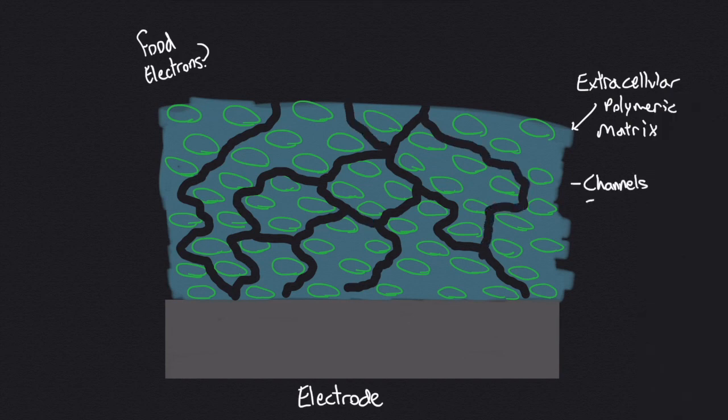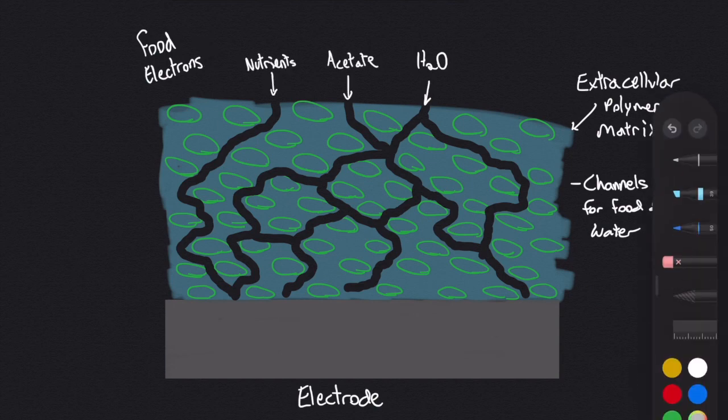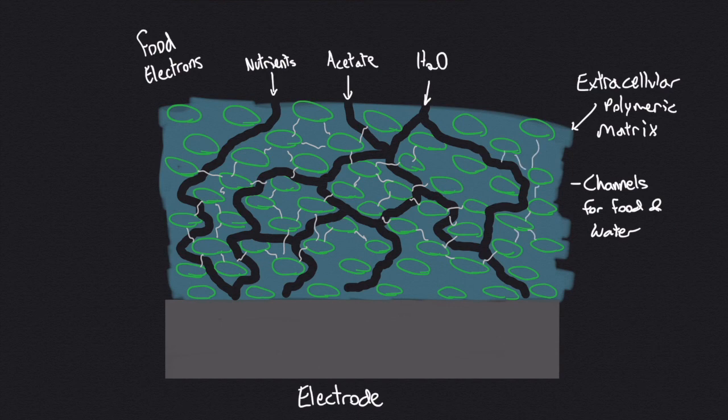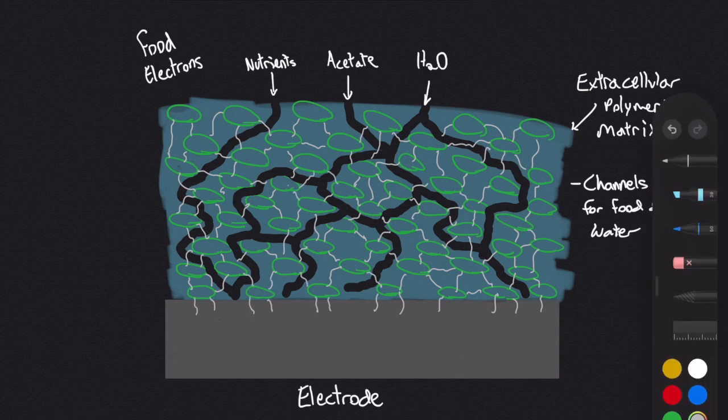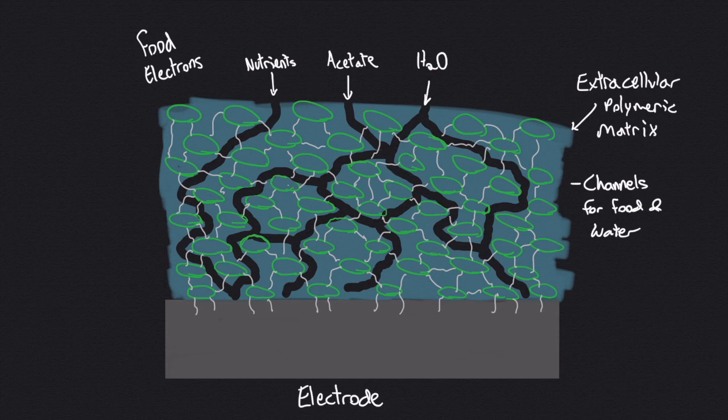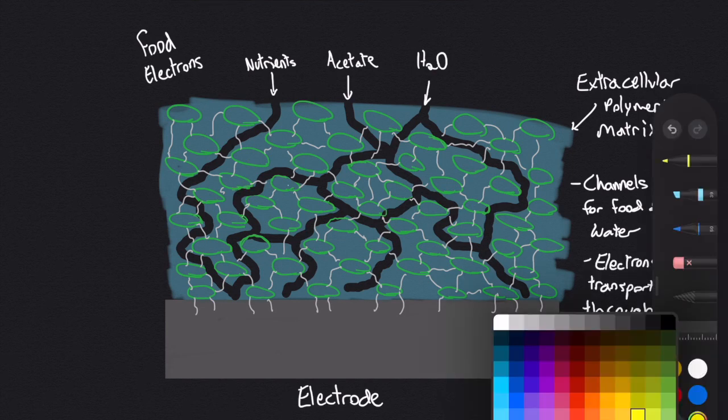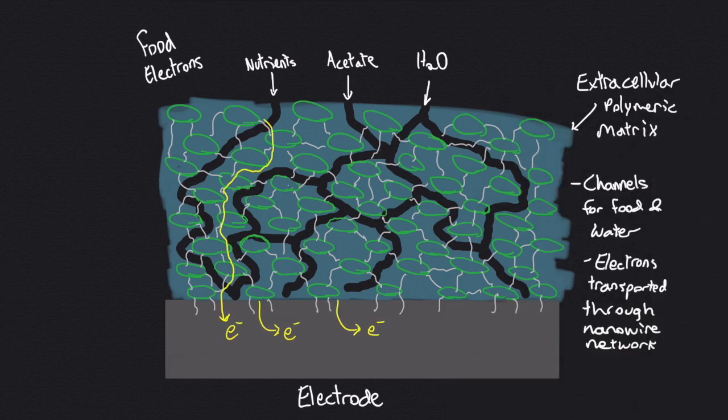In the case of Geobacter sulfurreducens, electrons are transferred throughout the film with the assistance of microbial nanowires which form a sort of conductive network channeling electrons towards the electrode. This network of sharing food and transporting electrons allows Geobacter sulfurreducens to be one of the most effective organisms for microbial fuel cells.